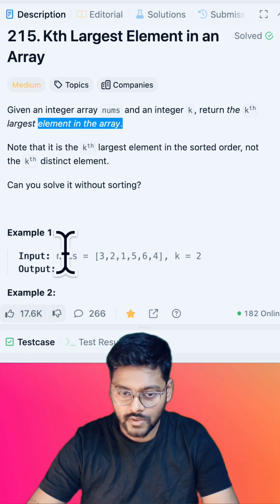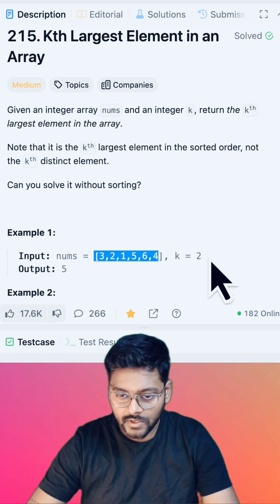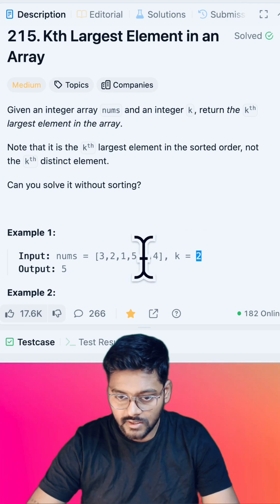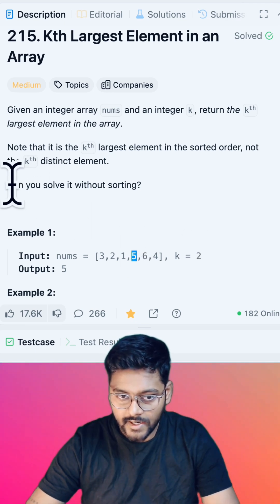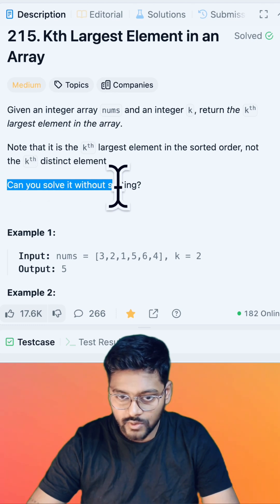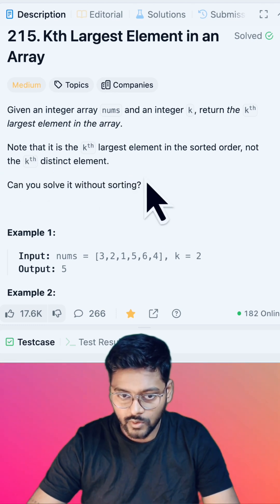So let's say in this example we have to return the second largest. Largest is six, second largest is five. And it is also given that we cannot use sorting in this problem.